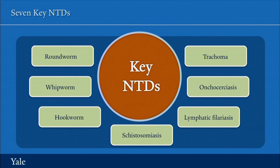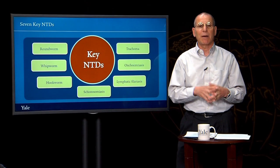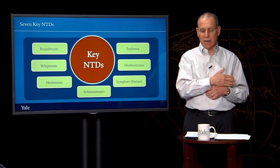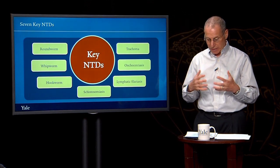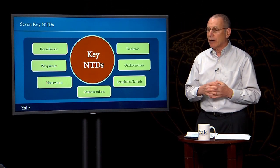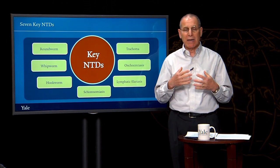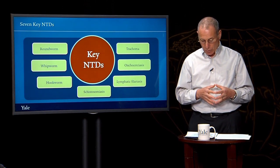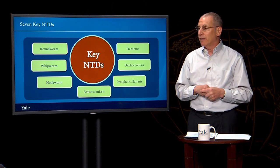Schistosomiasis is transmitted when flukes infect freshwater snails; when humans come in contact with them, the fluke can penetrate the skin. Lymphatic filariasis, often referred to as elephantiasis — this disease that causes substantial and sometimes horrible swelling of the extremities — is spread when mosquitoes bite an infected person, ingest the larvae, and pass it on to another person. Onchocerciasis is spread in a similar way but by black flies. And trachoma, a blinding disease caused by bacteria, is transmitted when someone comes in contact with discharge from the eye, or when flies do the same and then land on another person's eye.